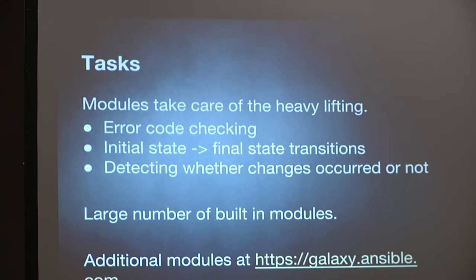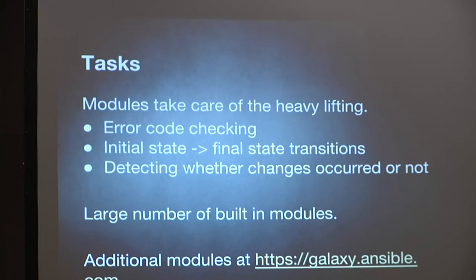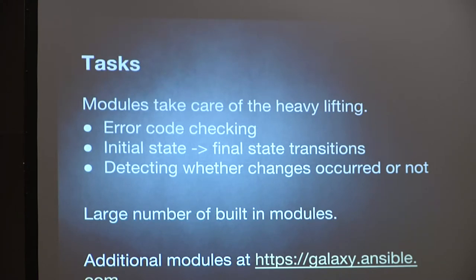Modules take care of all those state fluctuations — error code checking, initial state handling. When you say restart Apache, if Apache is already running it calls restart; if it's not running, it calls start. There are many built-in modules, plus galaxy.ansible.com for user-contributed modules. You can find modules for AWS/EC2, OpenStack, Rackspace, Azure (the Microsoft Cloud), and more.